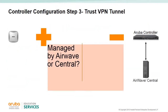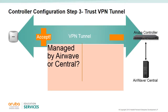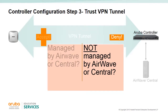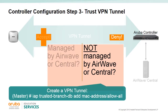The release of controller 6.4 and IAP 4.0 requires that an IAP be managed by Airwave or Aruba Central in order to form a VPN tunnel to the controller. Locally managed IAPs will no longer be able to complete this step — this change was made for security reasons. If a client has an older IAP VPN deployment or locally managed IAPs that must form VPN tunnels to a controller at version 6.4, they will need a specific configuration to bypass this check: use the command 'IAP trust branch DB add <MAC address>' or 'allow all'.